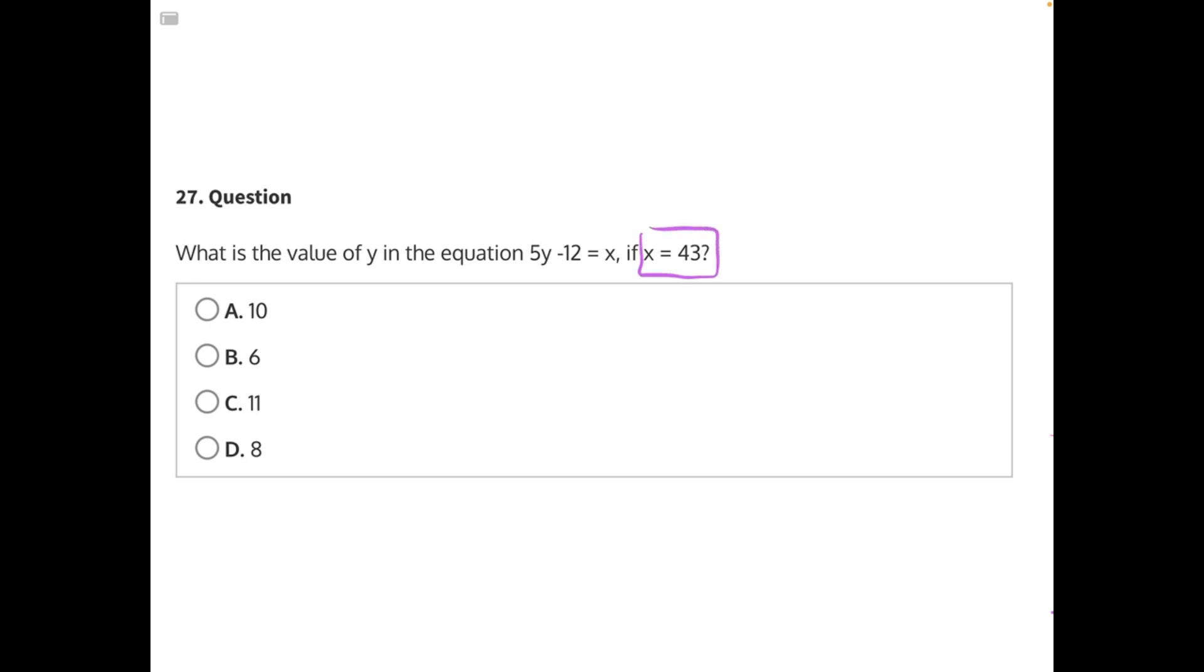Let's start by substituting in 43. We have 5y minus 12 equals x, which is 43. Now we can begin to isolate our variable y by doing opposite operations. Let's start with 12. 12 is being subtracted, so we need to add 12 to both sides.